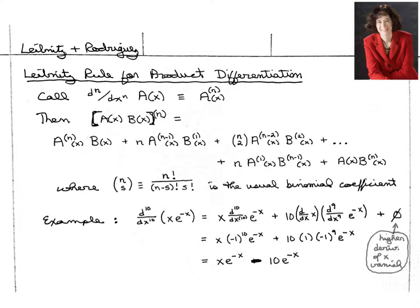So the coefficient of this leading term is 1, the next one is n, the next one will be n choose 2, and so on,